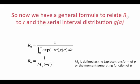This general expression is sometimes abbreviated using the notation of a moment generating function or Laplace transform of G. R0 is one over the Laplace transform of G evaluated at minus R, but the Euler-Lotka form is probably easier to remember.